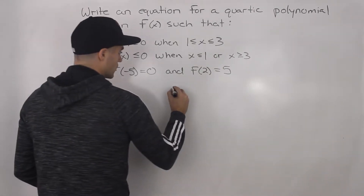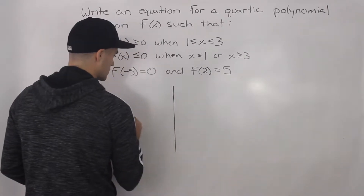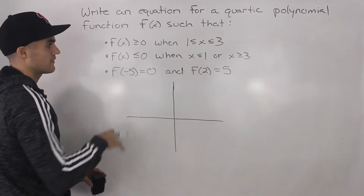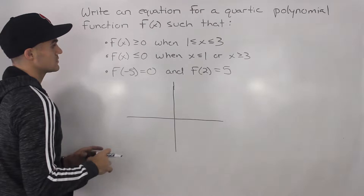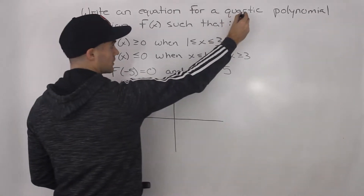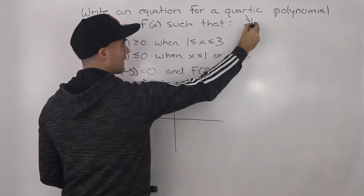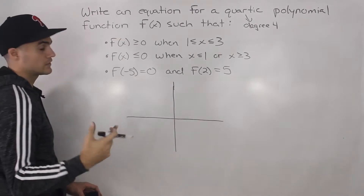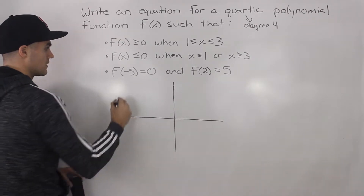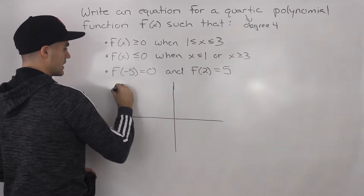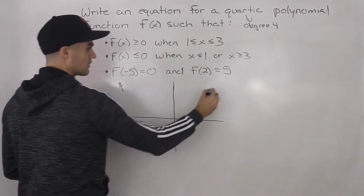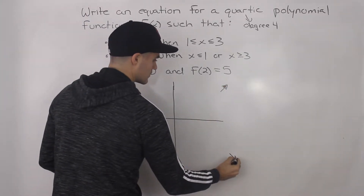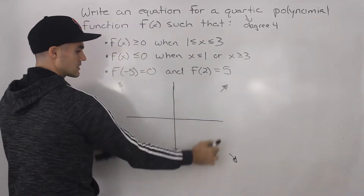Before writing out the equation, as I've mentioned before when we've done a question like this, you always want to try to graph it first and then write out the equation after, just so you can visually see what's going on. This is a quartic polynomial so we know it has a degree of four. We don't know whether the leading coefficient is going to be positive or negative, so this quartic polynomial could have end behavior from here to here or from here to here.